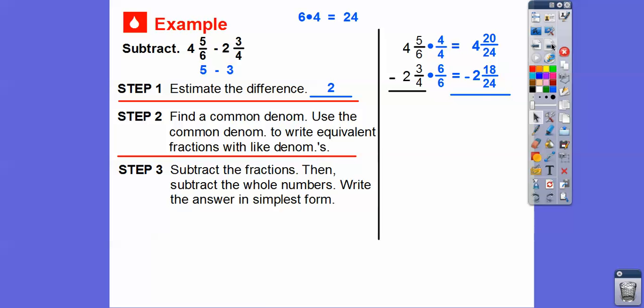So now we're going to subtract the fraction parts here first, and then we'll subtract the whole numbers. So 20 over 24 minus 18 over 24. We just subtract the numerators now that we have common denominators. 20 minus 18 is 2 over 24. And then subtract 4 minus 2. 4 minus 2 is 2. And then now we've got to write the answer in simplest form.